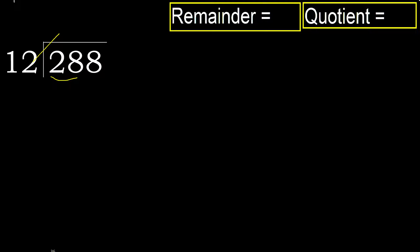12 multiplied by 3 is 36, which is greater. Multiplied by 2 is 24, which is not greater. So 28 minus 24 is 4.